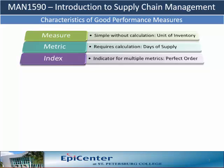Finally, an index is more complex — it combines two or more metrics into a single indicator. We saw one of those in chapter 12, and we labeled it a perfect order as an example.